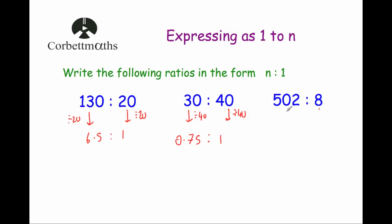Finally: 502 to 8. We want this 8 to become 1, so we divide both numbers by 8. The second number becomes 1, and 502 divided by 8 is 62.75. So 502 to 8, written in the format n to 1, is 62.75 to 1.